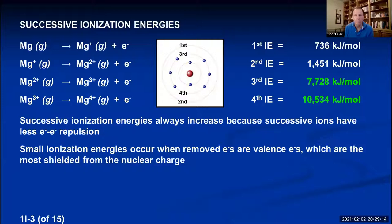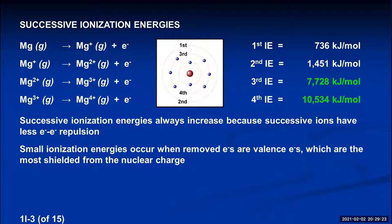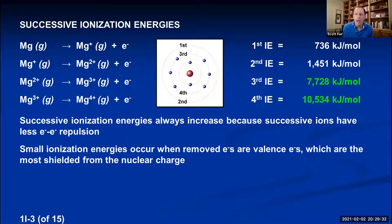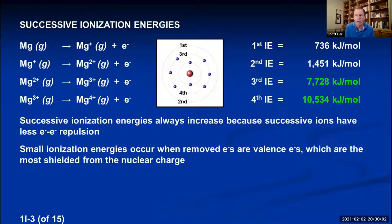For elements in the d-block, the situation is different. When you have a d-block element, you may easily lose two outer S electrons, but the D electrons' ionization energies aren't dramatically higher. There isn't a large energy gap between, say, the 4S and 3D sublevels, so both S and D electrons can sometimes be removed. This makes predicting d-block ion charges more complex — different combinations are possible.